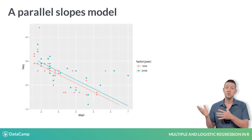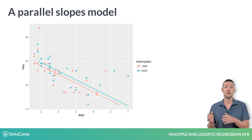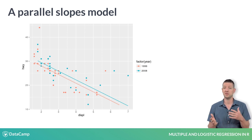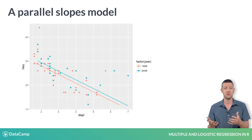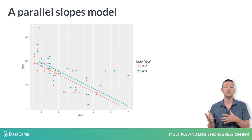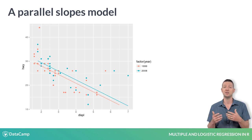Here we see a visual depiction of a parallel slopes model. These models occur when one of the explanatory variables is numeric and the other is categorical. In this case, the year variable has two levels, and the model accordingly consists of two parallel lines.